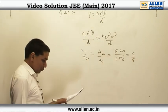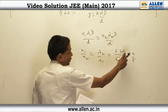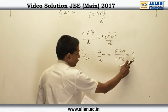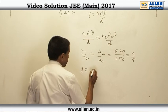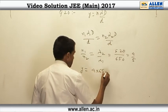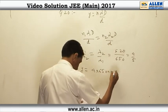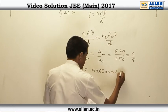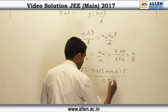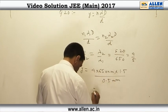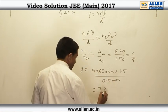So the least value of n₁ can be 4 and least value of n₂ can be 5. So y comes out to be 4 multiplied by 650 nanometer multiplied by capital D is 1.5 meter, small d is 0.5 millimeter, and that gives us a distance of 7.8 millimeter.